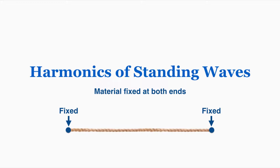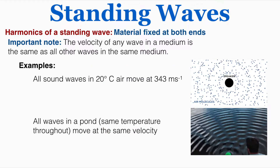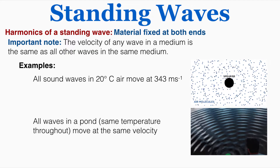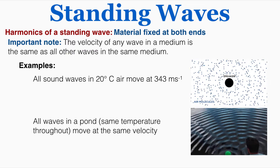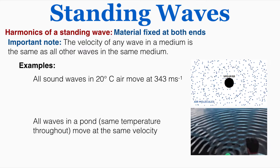We're going to start with the harmonics of a material that is fixed at both ends — that can't oscillate on either end. One important note before we start is that the velocity of any wave in a medium is the same as all other waves in the same medium.